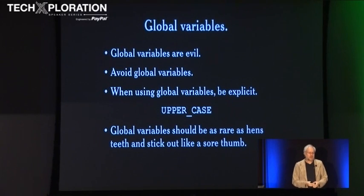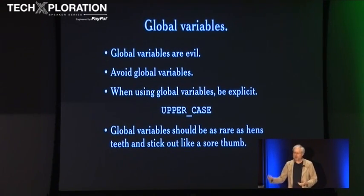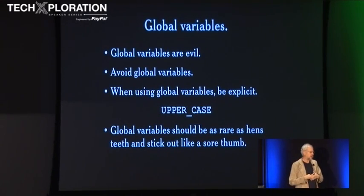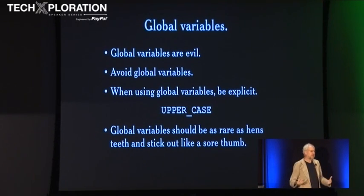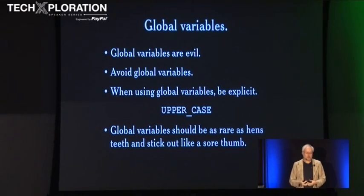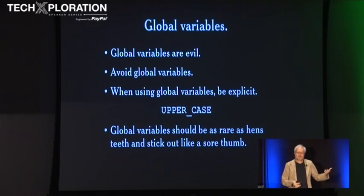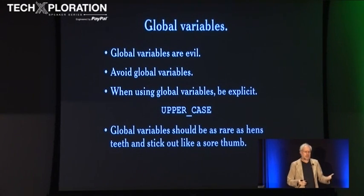Global variables are evil — they cause reliability problems, performance problems, and security problems. Unfortunately, JavaScript in its current state requires that you have global variables, because that's how compilation units are able to interact with each other. There's no linker, so everything runs together in a common global space. Because you can't avoid global variables, you want to have as few as possible. I write my global variables all in uppercase so the reader knows this is a dangerous global variable with consequences. In other languages uppercase means different things, like macros in C, but we don't have macros in JavaScript.